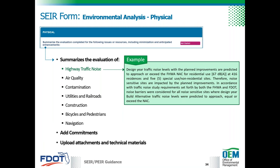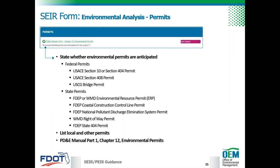The physical resources section includes various subsections. The permit section allows selection of federal, state, and local permit types that will be needed for the project. These should have been identified through coordination with permit agencies and the permit coordinator during the environmental analysis. More information can be found in Part 1, Chapter 12 of the PD&E manual.